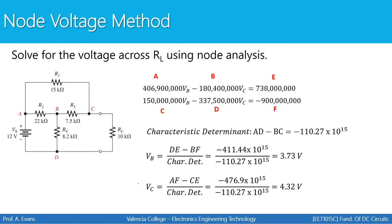That concludes our examples for the node voltage method. We'll spend time in class practicing these methods. Look online for suggested problems to get additional practice. It's a great idea to try multiple methods whenever you can. Note that a circuit like this using the loop current method would require three loops and three equations — solving a three-variable matrix is covered in the textbook. Keep practicing and bring your questions to class.